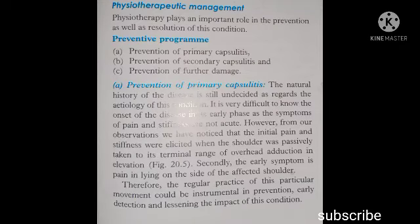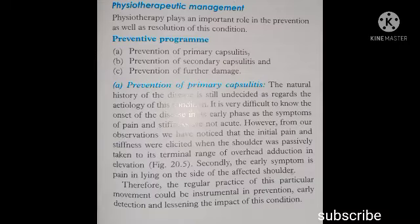Prevention of primary capsulitis: the natural history of the disease is still undecided as regards the etiology. It is very difficult to know the onset of the disease in its early phase, as the symptoms of pain and stiffness are not acute. However, from observations, the initial pain and stiffness were elicited when the shoulder was passively taken to its terminal range of overhead abduction in elevation. Secondly, an early symptom is pain when lying on the side of the affected shoulder.